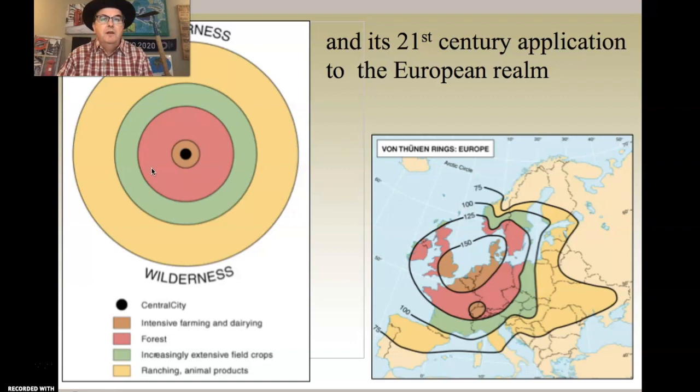Here's the European application of the von Thunen model: a big population center with extensive land use extending outward. This isn't a perfect application, but it works pretty well.